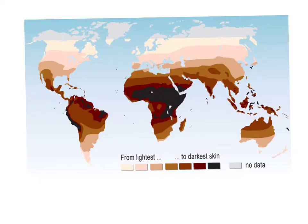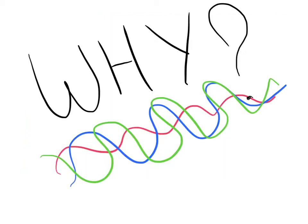Let's take a look at this map. This map shows us the distribution of skin color across the world. In areas closer to the equator, people's skin is darker than in areas further from the equator. And again, we face the question: why?